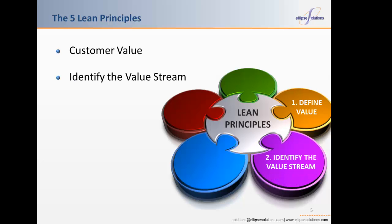Next is identifying the value stream. The value stream is a sequence of process steps needed to design, produce, and deliver products to the customer. Value stream mapping is an important tool that models the lean transformation. Next is flow — create flow wherever possible in the process. Flow manufacturing ties all the production and transfer activities together into the most efficient combinations to maximize value-added content while minimizing waste.